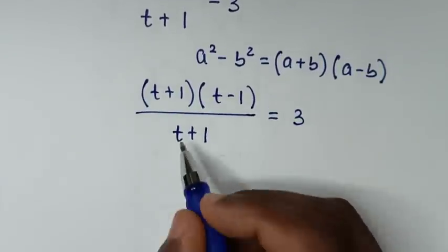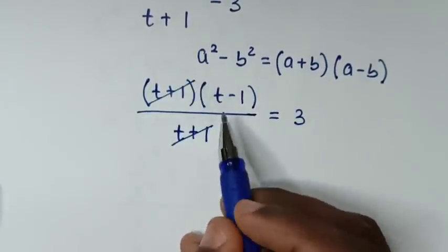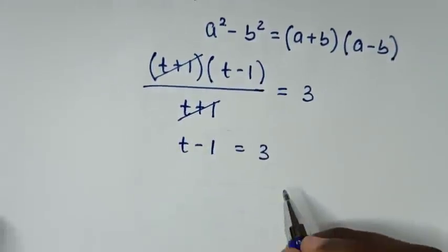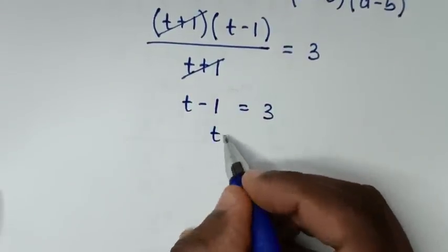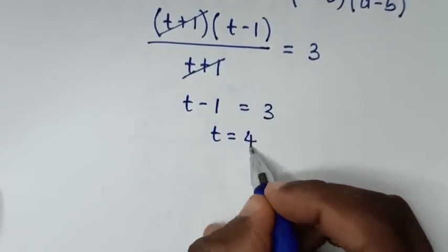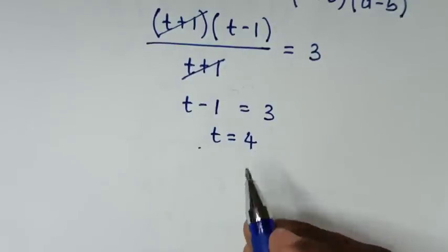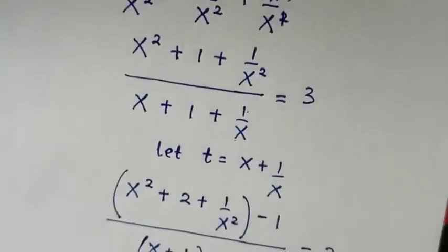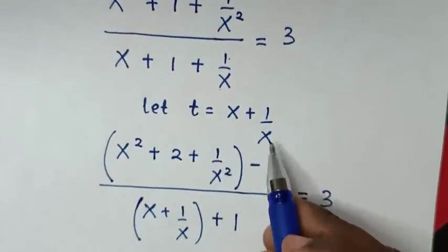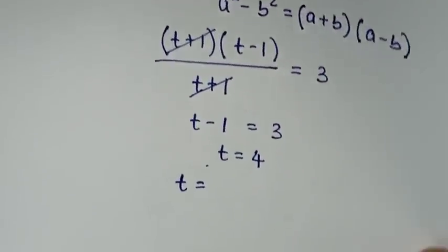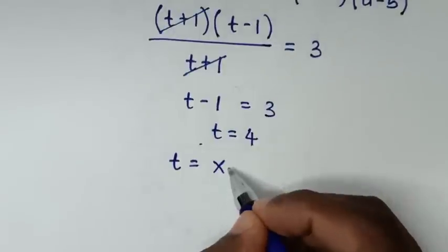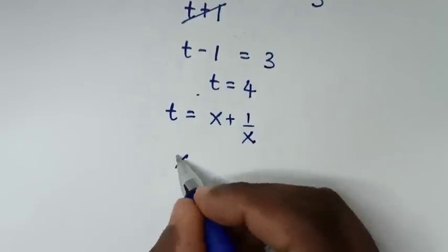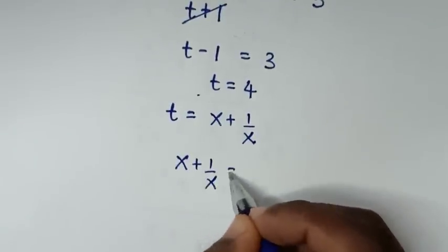In the next step, (t plus 1) cancels, so it becomes t minus 1 equal to 3. Taking negative 1 to the right side gives t equal to 4. Recalling that t equals x plus 1/x, we compare the two equations.